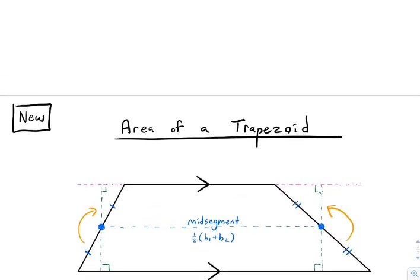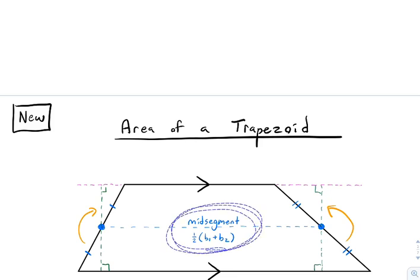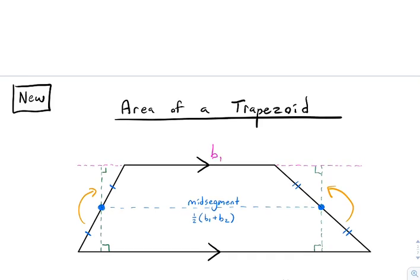Let's first look at the area of a trapezoid. Basically, all we know about a trapezoid is we can draw the mid-segment — we talked about that in the past. Also, since the two lines are parallel, the consecutive angles must sum to 180 degrees. Well, let's just put that mid-segment in here — I drew it in blue. The length is the average of the two bases: base 1 and base 2 added together and divided by 2.